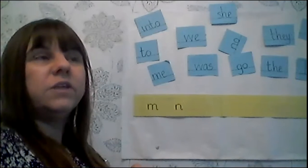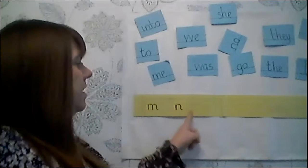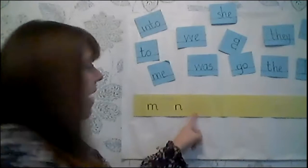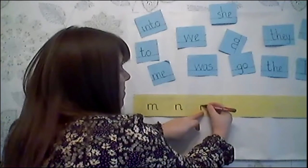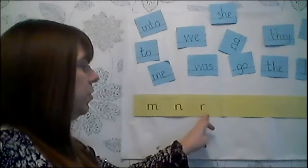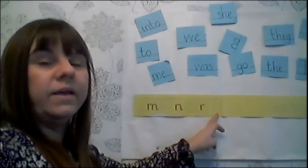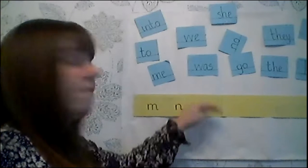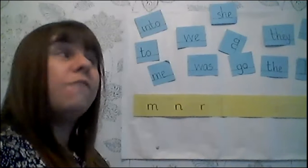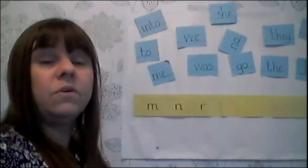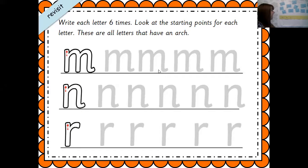Our final letter is R. Again, start at the top, straight back, back up with a small arch — but we only do halfway. We don't form a full arch for the R. I would like you to continue with your formation on your own or with your adult, writing six letters each time for each letter. Each time you write one, make sure it's better than the first one.